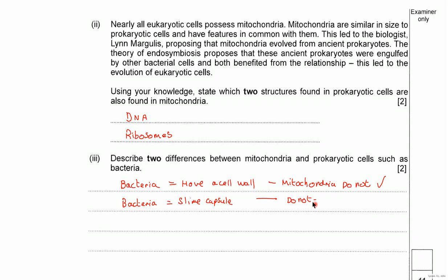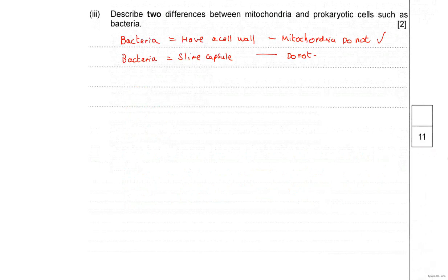Now, the other things that you could have put in is that bacteria have flagella but mitochondria do not. Bacteria have mesosomes but mitochondria do not. And the other one is the bacteria can have plastids which are like photosynthetic structures within them. Mitochondria do not have any of those. They do not have the ability to photosynthesize. Okay, that is the feedback for the last question there.